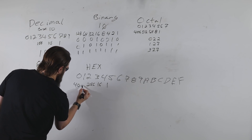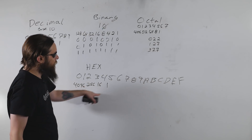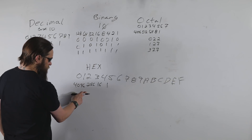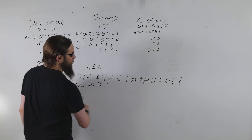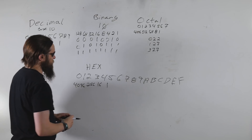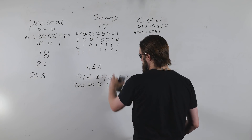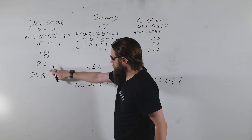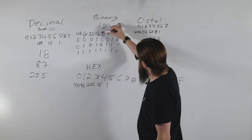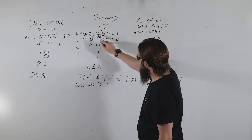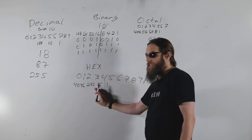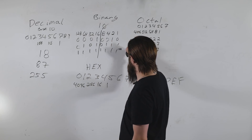Interestingly, hex only takes four place values to get to 4096, while octal takes five. To translate binary into hex, instead of using three bits we use four, because the next place value is 16. Everything to the right of the 16s column is captured in those four bits.